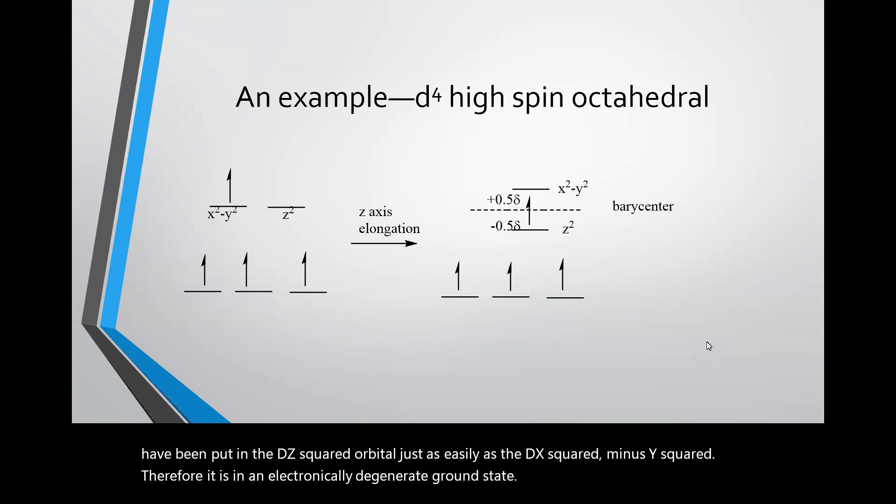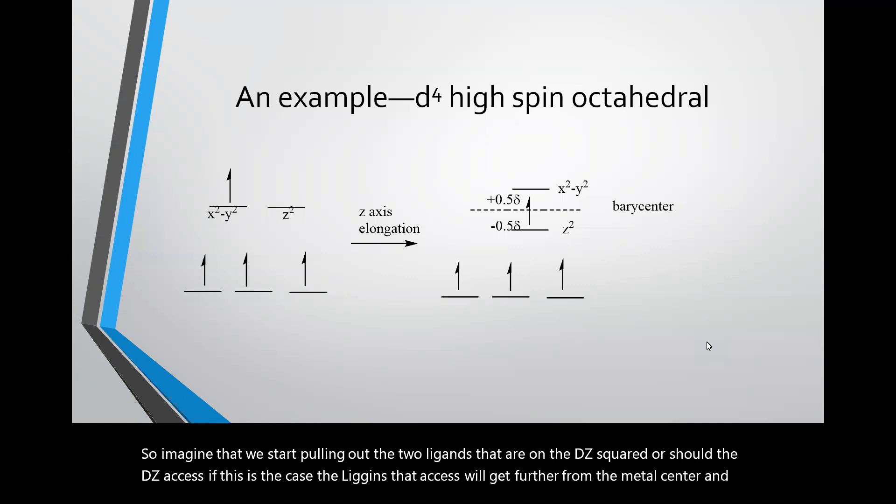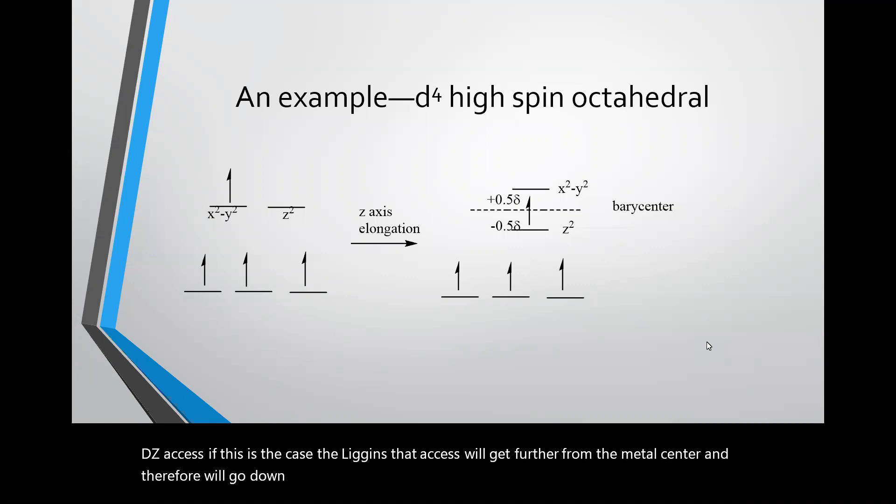The Jahn-Teller theorem tells us that the molecule will distort to lower the energy of the complex by lowering the symmetry. So imagine that we start pulling out the two ligands that are on the dz² axis. If this is the case, the ligands on that axis will get further from the metal center and therefore will go down in energy because any electrons in the dz² orbital are now less repelled by the ligand electrons.